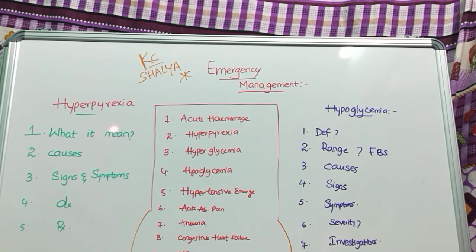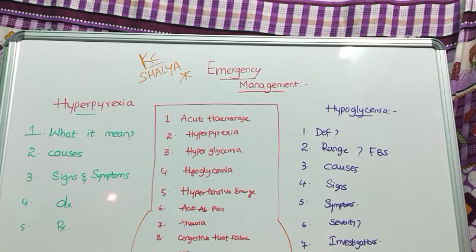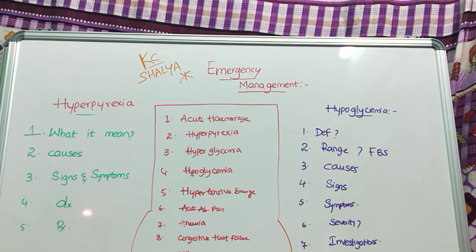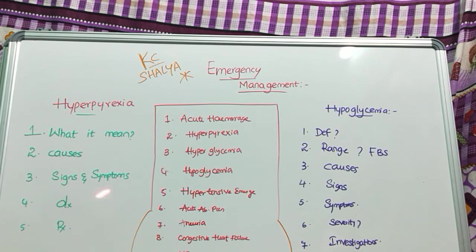Regarding diagnosis, CBC — complete blood count — will be the standard diagnostic test for hyperpyrexia. CT (computerized tomography) and MRI will be done in cases of intracranial hemorrhage, such as in road accidents or similar conditions.